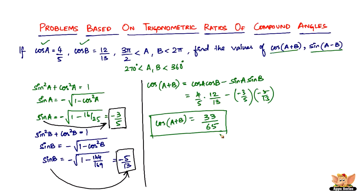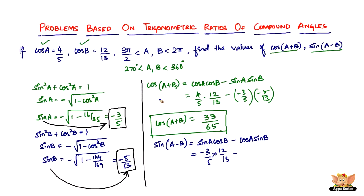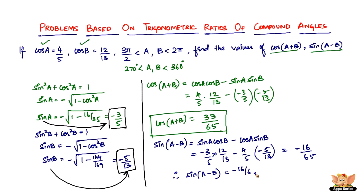Now let's solve sine(a − b). Sine(a − b) = sine a · cos b − cos a · sine b. Substituting: sine a = −3/5, cos b = 12/13, cos a = 4/5, sine b = −5/13. Solving this gives −16/65. Therefore sine(a − b) = −16/65. That ends this problem.